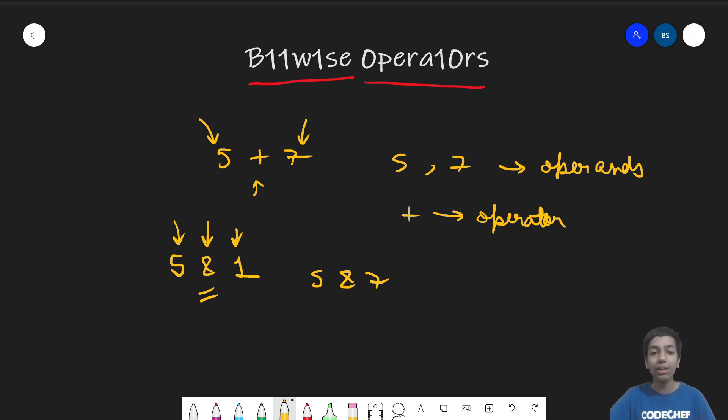So 5 and 1. For any bitwise operator, what the computer will do is instead of working in decimal system, it will work on the bits, basically in the binary form. So 5 will be first converted to its binary form. So 5 we know is 101. And I am not going into the details of how to convert a number. The binary system is kind of a prerequisite to this video.